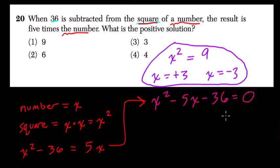And that's going to equal 0, because I took 5x from both sides. Right? And 5x minus 5x is 0.